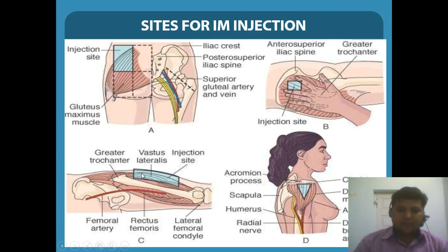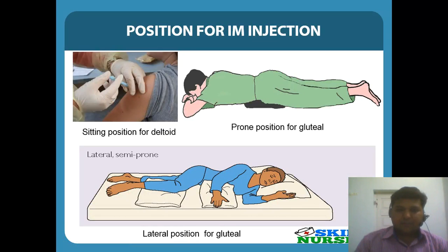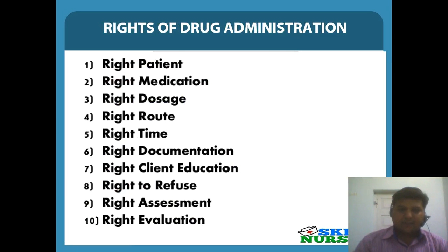You can give injection midway between the greater trochanter and the lateral femoral condyle — that is the vastus lateralis muscle. For the deltoid site, palpate the acromion process and two fingers below it; the triangle shown in the diagram is the site of deltoid injection. For the deltoid region, sitting position is more comfortable. For the gluteal region, prone position or side-lateral position is preferred, with the knees placed to relax the gluteal muscles.